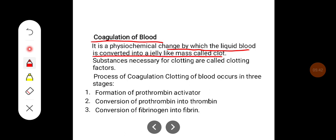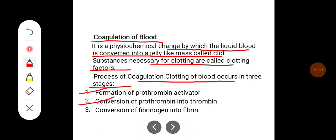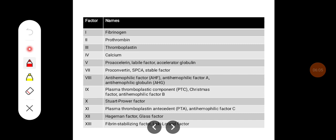Coagulation of blood is a physicochemical change by which liquid blood is converted into a jelly-like mass called a clot. Substances necessary for clotting are called clotting factors. The process of coagulation occurs in three stages: first, formation of the prothrombin activator; second, conversion of prothrombin into thrombin; and third, conversion of fibrinogen into fibrin. There are 13 circulating coagulation factors classified by Roman numerals.